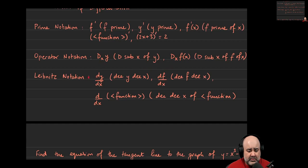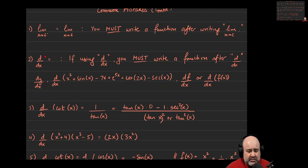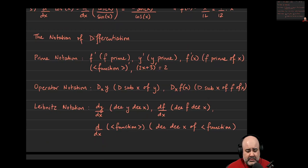Leibniz notation is more frequently used — Leibniz and prime notation are used most frequently for our purposes. You read dy/dx as 'dy dx,' and it means find the derivative of a function named y. The function name is always on top; the variable with respect to which you're differentiating goes on the bottom. You can also write it as df/dx, which assumes the function is named f and you're differentiating with respect to x. And if you have d/dx, as we said earlier, you must follow it up with a function — you can say d/dx of some function in parentheses.